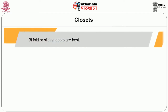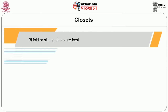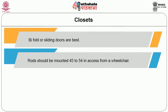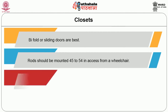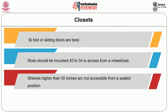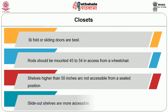Closets: Bifold or sliding doors are best. Rods should be mounted 45 to 54 inches for access from a wheelchair. Shelves higher than 50 inches are not accessible from a seated position. Slide-out shelves are more accessible.